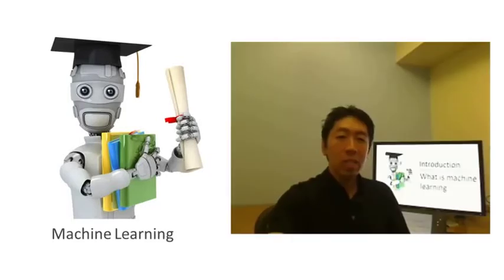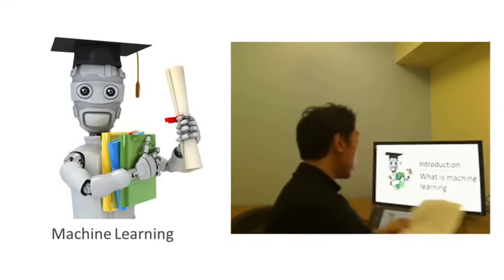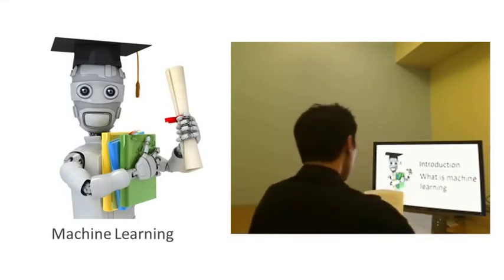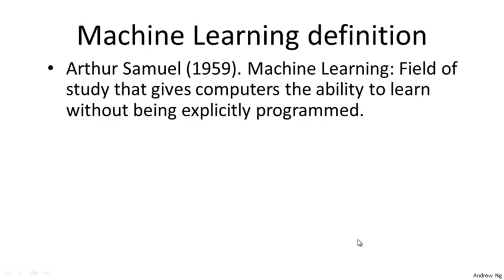Even among machine learning practitioners, there isn't a well-accepted definition of what is and what isn't machine learning. But let me show you a couple of examples of the ways that people have tried to define it. Here's the definition due to Arthur Samuel: he defined machine learning as the field of study that gives computers the ability to learn without being explicitly programmed.